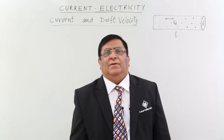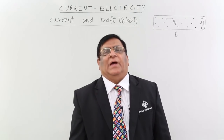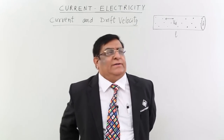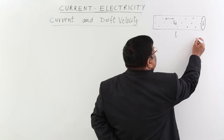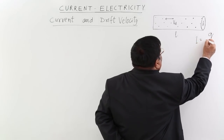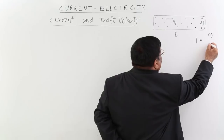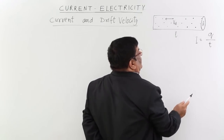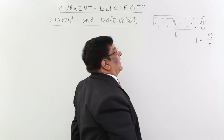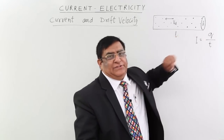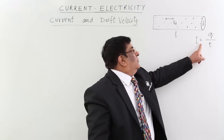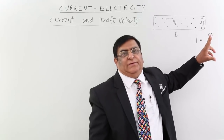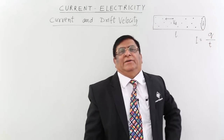We will derive the relation between electric current and drift velocity. We know electric current has a fundamental relation: if charge Q passes through a cross section in time t, then in one second the charges passing are Q upon t, and that is the measurement of electric current I. Now we have to replace this with an expression carrying drift velocity, and then we will get the measurement of electric current.